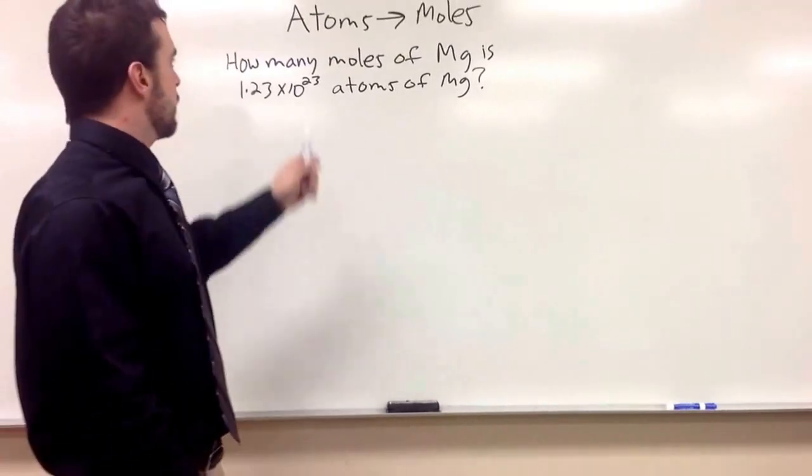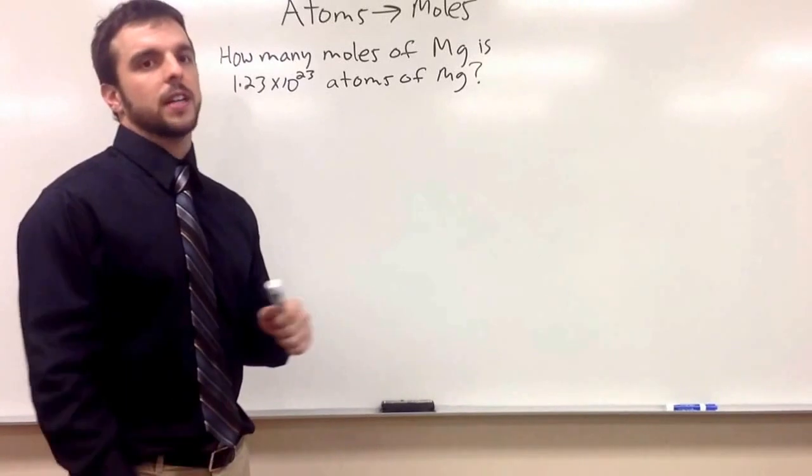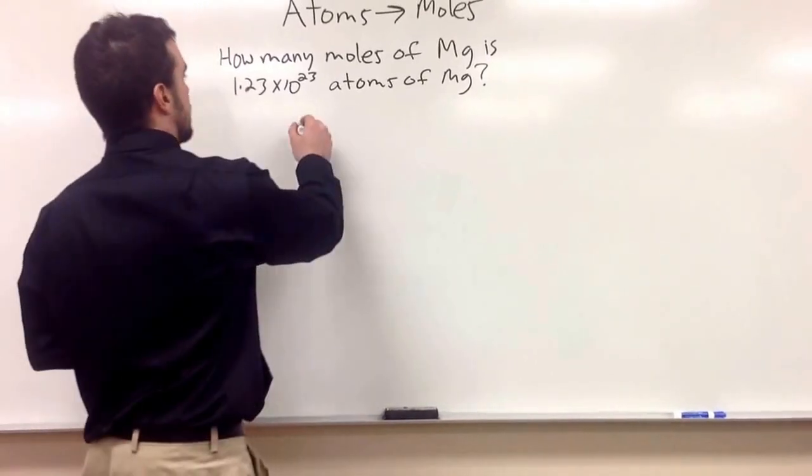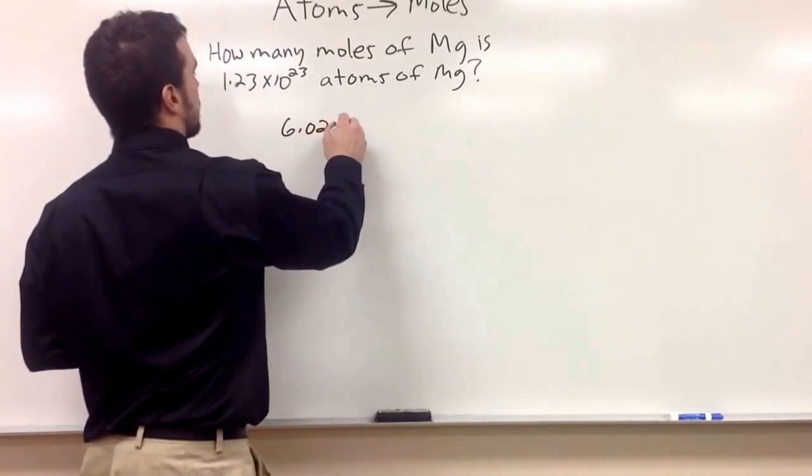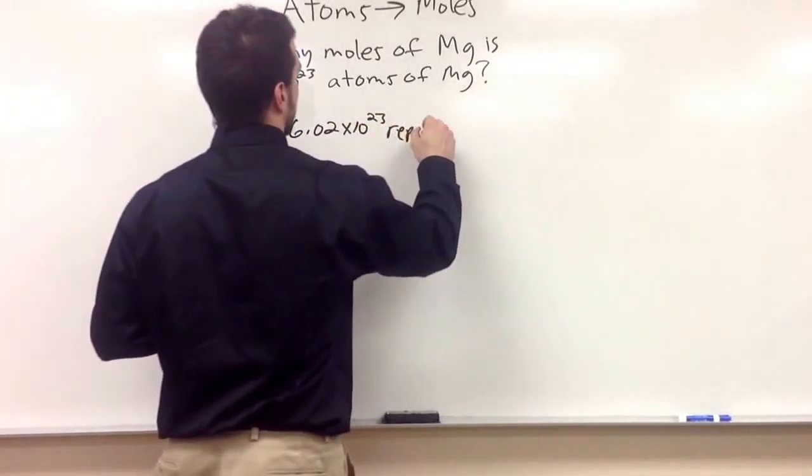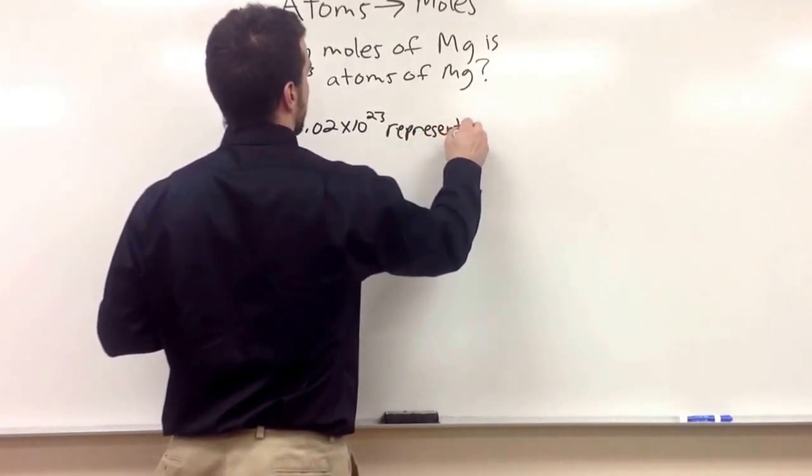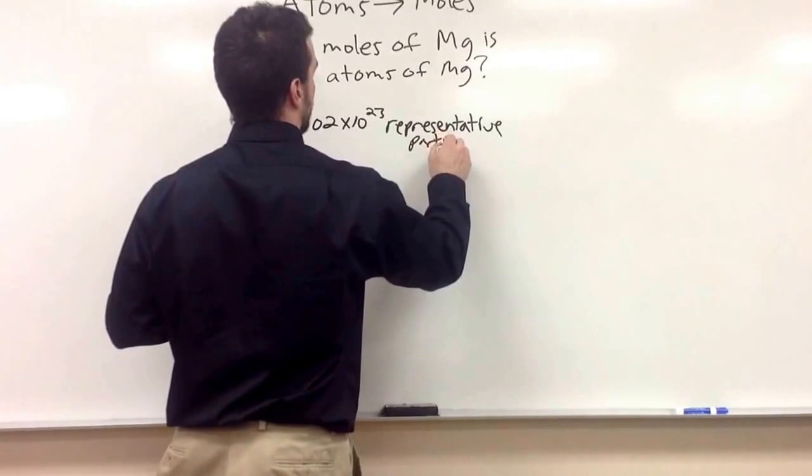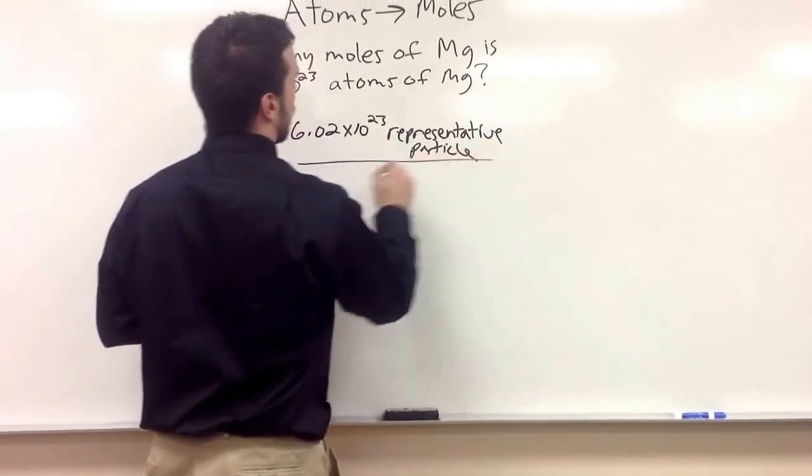So first off, we know how many atoms we have, so we're going to have to have a conversion factor. And our conversion factor, as we know, is the mole. The mole is 6.02 times 10 to the 23rd representative particles per one mole.